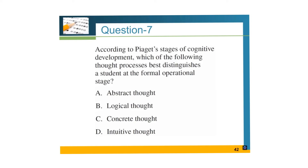Question number seven: according to Piaget's stages of cognitive development, which of the following thought processes best distinguishes a student at the formal operational stage? This question is all about knowing Piaget's stages of cognitive development. Abstract thought develops at the formal operational stage, and logical thought starts developing at the pre-operational stage. So the right answer is A.